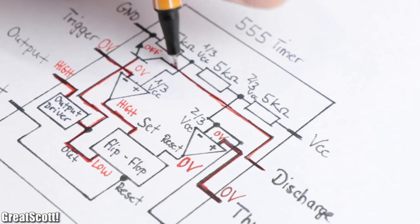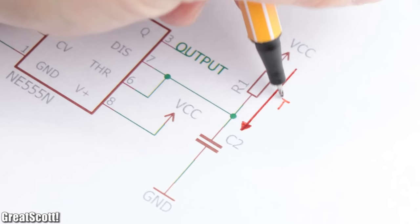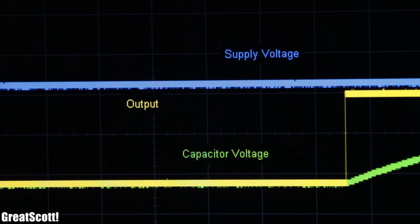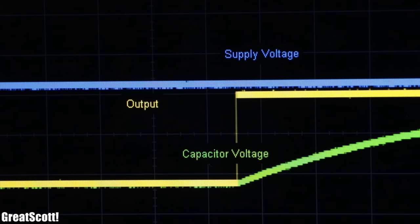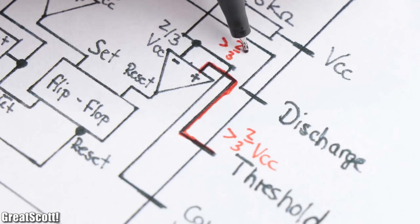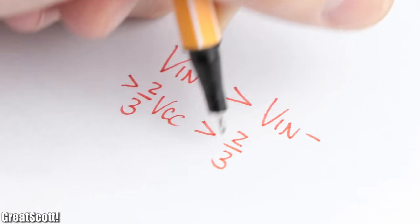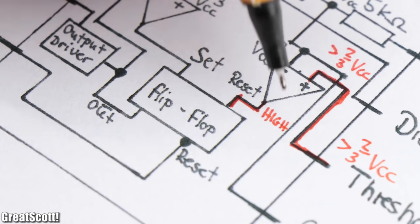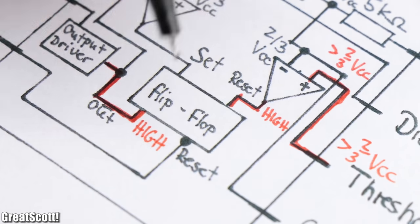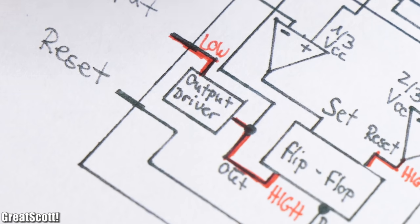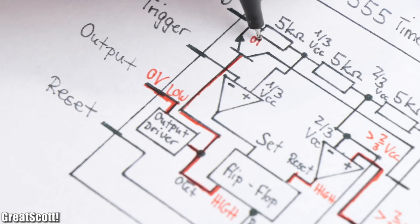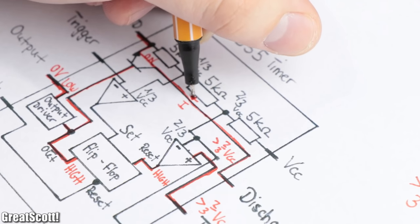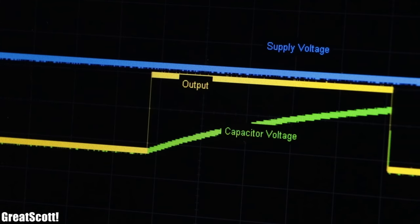And now that pin 7 no longer connects the capacitor to ground, it can charge up through the resistor. But once the voltage of the capacitor reaches two-thirds of the supply voltage, the positive input of the second comparator has a higher voltage than the negative one, and thus it turns its output on. This resets the flip-flop, turns off the output of the IC, and activates the bipolar transistor, which now discharges the capacitor rapidly. And we are back at the beginning.